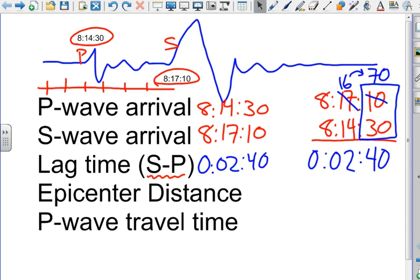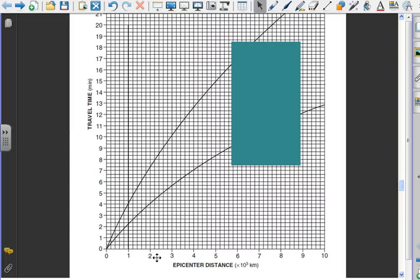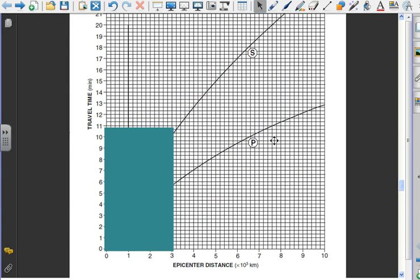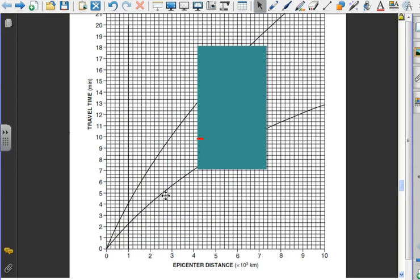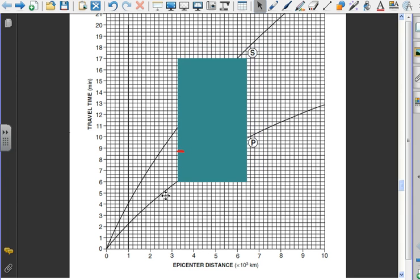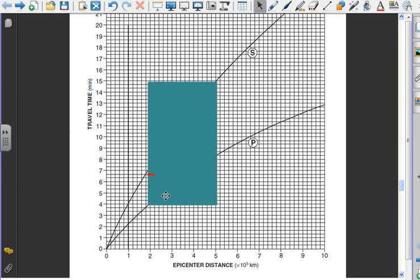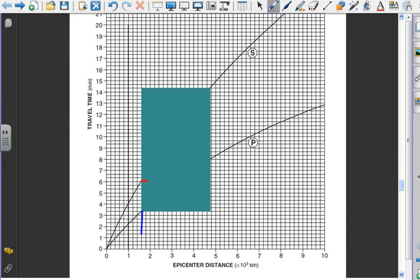Now this epicenter distance, we're going back to this graph. We're looking to see where 2 minutes and 40 seconds gap is in those lines. So we're going to make a little mark at 2 minutes and 40 seconds. We're going to group this together so that it will slide up nicely for us. And we're going to slide this down, keeping the corner on the P line until that mark hits the S line. Getting close, getting close. That's not bad there.